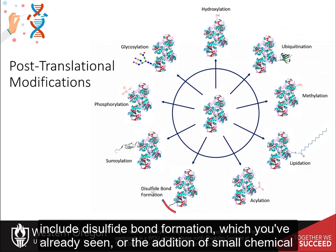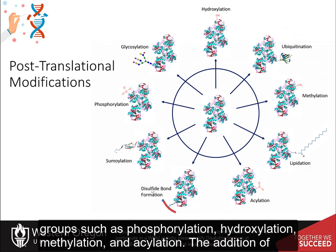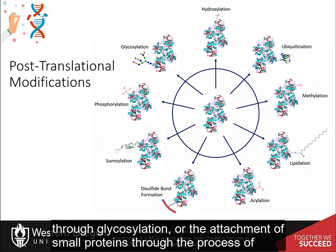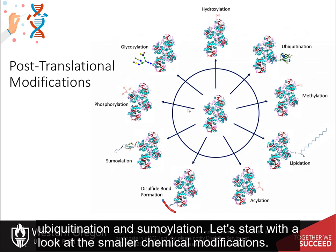The major modifications we will become familiar with include disulfide bond formation, or the addition of small chemical groups such as phosphorylation, hydroxylation, methylation, and acylation. The addition of larger groups can also include lipids through lipidation, sugars through glycosylation, or the attachment of small proteins through ubiquitination and sumoylation.